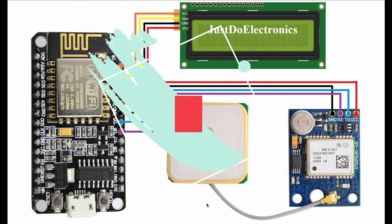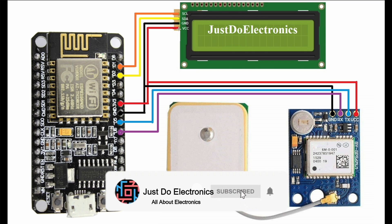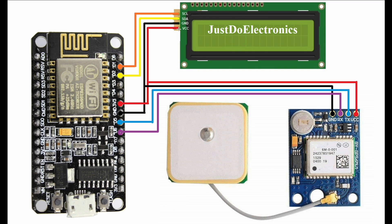In the circuit diagram of this project, I use the NodeMCU module and a 16x2 LCD display. The LCD interfaces with the I2C module via the SCA and SDA pins. The SCA pin is connected to pin D1 of the NodeMCU, the SDA pin is connected to D2, ground connects to ground, and 3.3V connects to VCC of the LCD.